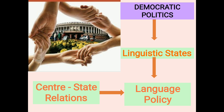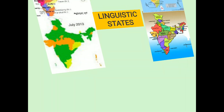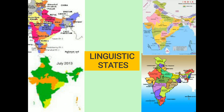There were three major tests for democratic politics in our country. They were: the creation of linguistic states, language policy, and center-state relations.